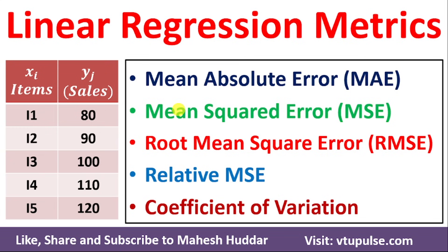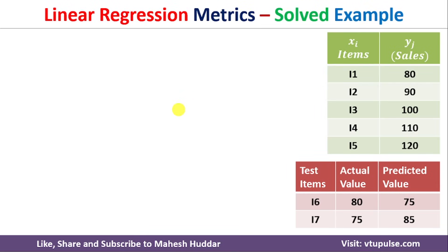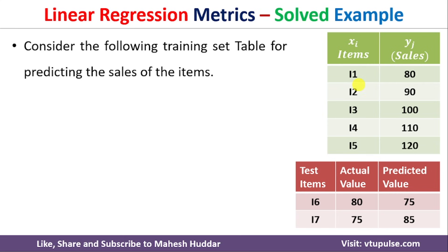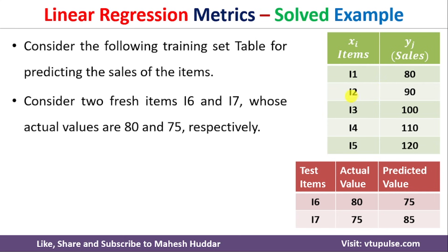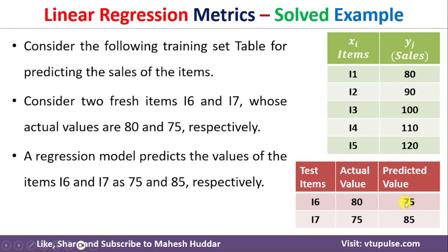Welcome back. In this video I will discuss what are the different metrics used to evaluate the performance of linear regression, with a simple solved example. To understand the different metrics, I will consider this example. We have been given five items of sales data, and two fresh test items — i6 and i7 — whose actual values are 80 and 75, and the predicted values are 75 and 85, as predicted by the linear regression model.